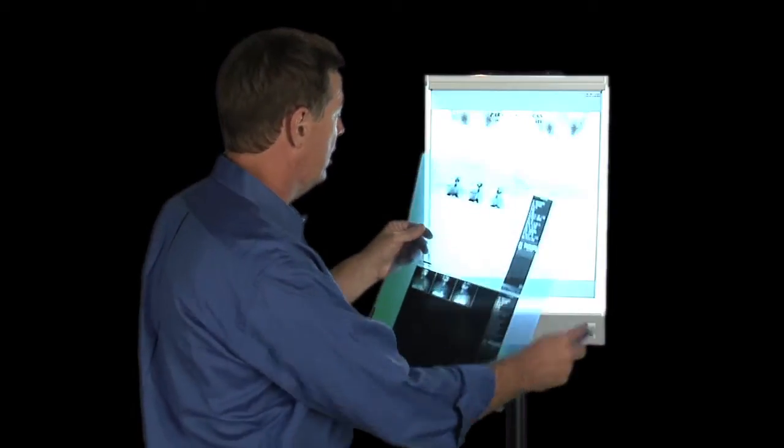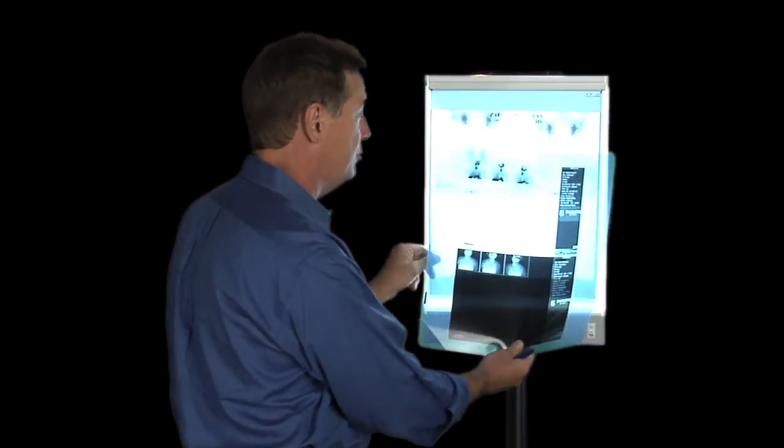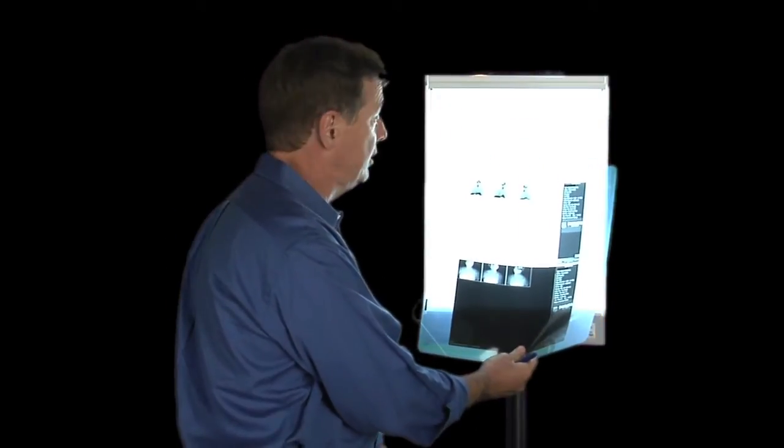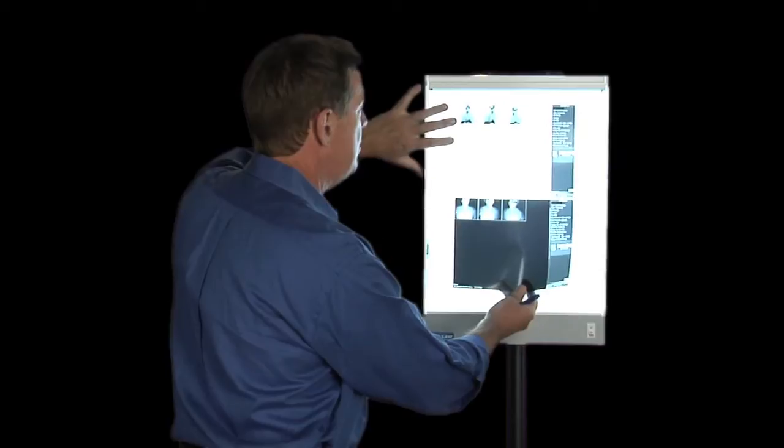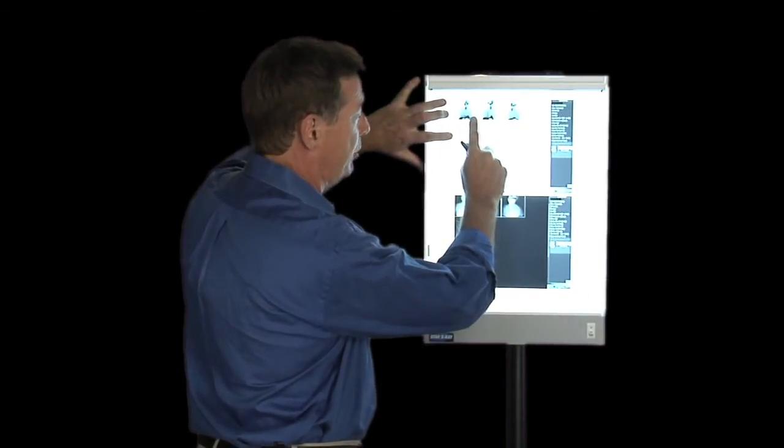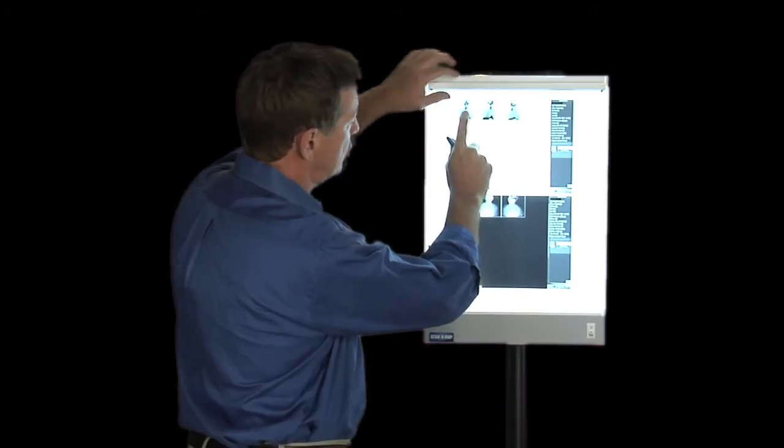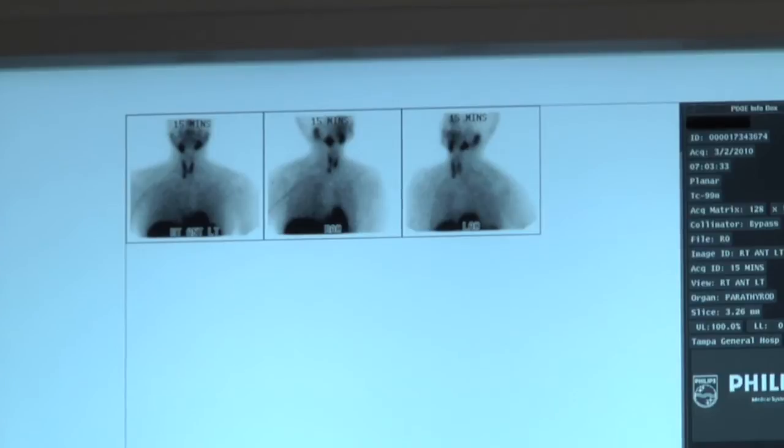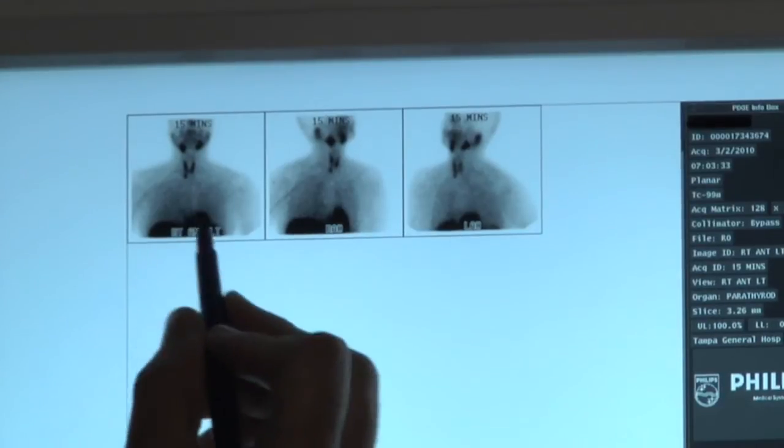That same patient has the Sestamibi scan done by us, by our team. Of course, we do several thousand of these a year. That same scan, that same patient, look how clean and crisp it is. Look how in focus it is. You clearly see the salivary glands, the butterflies, the thyroid, and the parathyroid tumor.